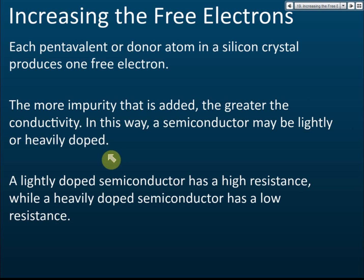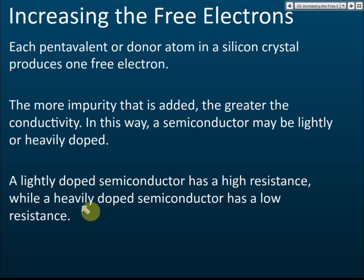Heavily doped means adding a lot of impurities, such as a large amount of phosphorus. A lightly doped semiconductor has high resistance because there are very few charge carriers. A heavily doped semiconductor has low resistance. This is important when constructing transistors — some parts of a transistor use lightly doped semiconductor and some use heavily doped semiconductor.